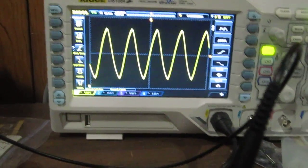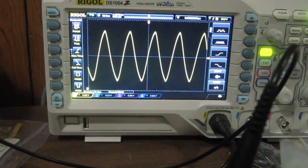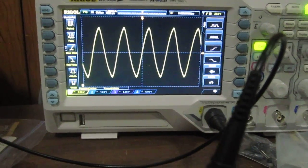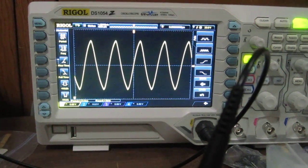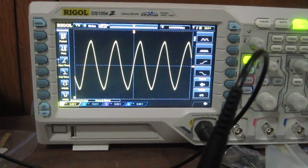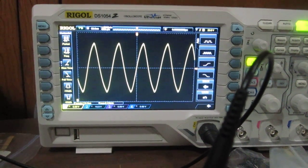So this is how a sine wave can be output with a 555 timer. To see the full detail of this circuit, including the schematic, please click the link in the description provided below. And thanks for watching.